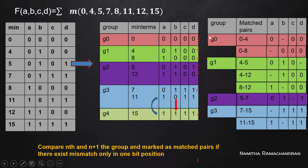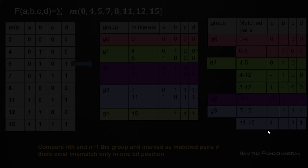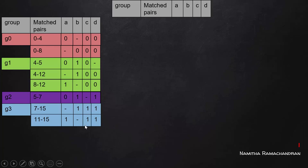This newly generated table of matched pairs is not the end of the procedure. We need to repeat the same process using this new table as input. All minterms in the previous table now have tick marks, so we continue with the matched pairs table.